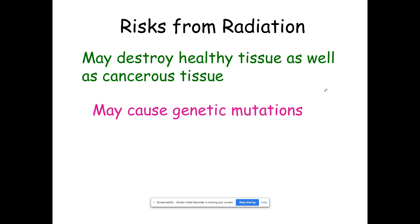Radiation may also cause genetic mutations. In the case of the Chernobyl accident or the Fukushima accident, anytime people have been exposed to a great deal of radiation, it could cause cancer — which is a mutation of body cells. Or if women are pregnant, it could cause mutations to the fetuses they're carrying, which could be manifested in many different ways.